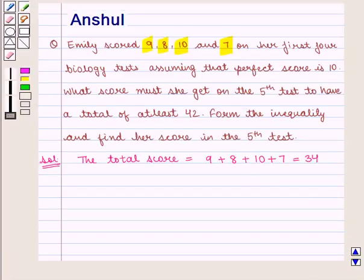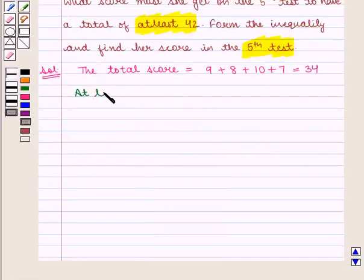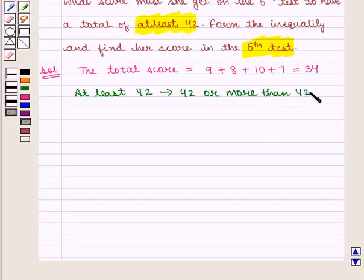We need to find her score in the 5th test if she can get a total of at least 42. At least 42 means 42 or more than 42, which means total score should be 42 or greater than 42.